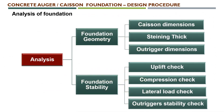The analysis part has two main components: one is foundation geometry and another is foundation stability. For foundation geometry, we need to decide the caisson dimensions. The caisson dimension includes: first, the height of the well or the height of the caisson — which depends upon the cover depth, grip length, or the flood level; second, the diameter of the well; third, the staining thickness; and fourth, the outrigger dimensions, which are the elements above the well foundation.